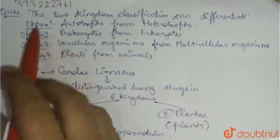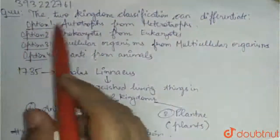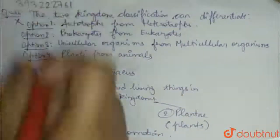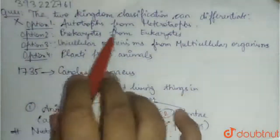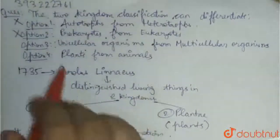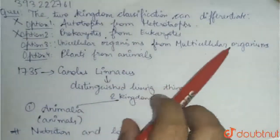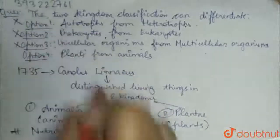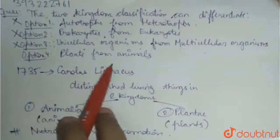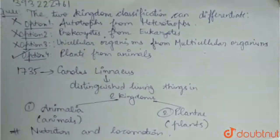Coming to the question: the two kingdom classification can differentiate — option one, autotrophs from heterotrophs, is a wrong option. Option two, prokaryotes from eukaryotes, is also wrong. Option three, unicellular organisms from multicellular organisms, is also wrong. Option four, plants from animals — this is our correct option.